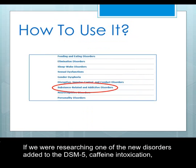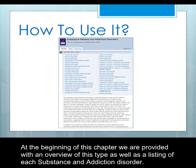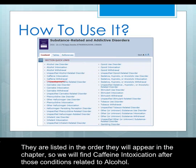If we were researching one of the new disorders added to the DSM-5, caffeine intoxication, we would look for and go to the chapter on Substance-Related and Addictive Disorders. At the beginning of this chapter, we are provided with an overview of this type as well as a listing of each substance and addiction disorder. They are listed in the order they will appear in the chapter, so we will find caffeine intoxication after those conditions related to alcohol.